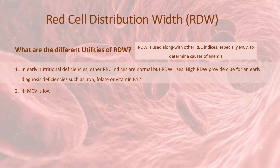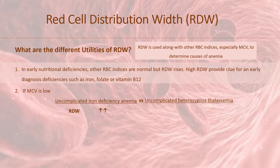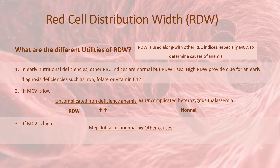If MCV is low, it aids in distinguishing between uncomplicated iron deficiency anemia and uncomplicated heterozygous thalassemia. RDW is elevated in the former while normal in the latter. Definitive tests are, however, required. If there is macrocytosis, RDW helps to distinguish between megaloblastic anemia and other causes of macrocytosis. RDW will be high in megaloblastic anemia while it will be normal in other causes.